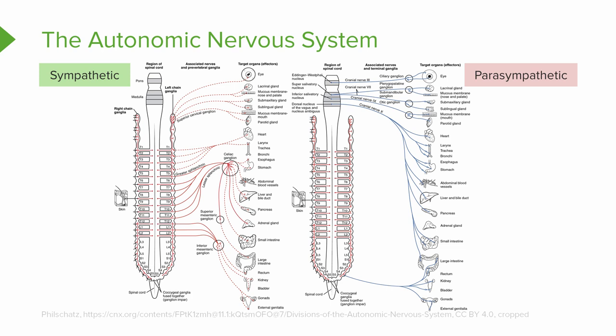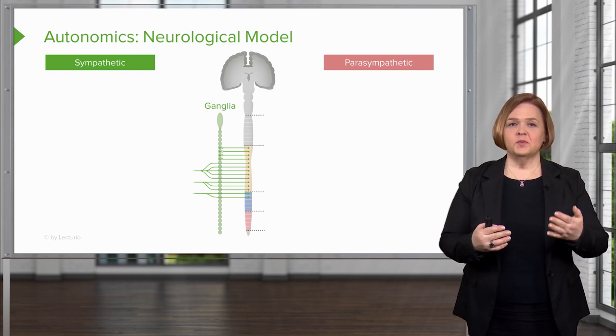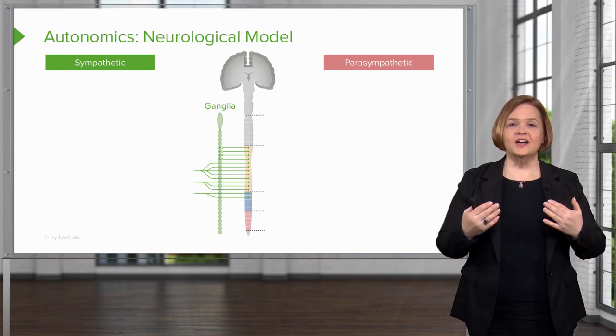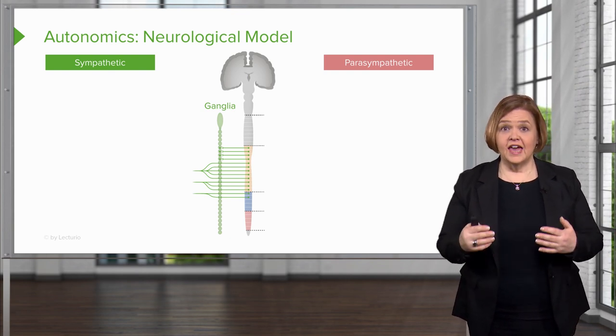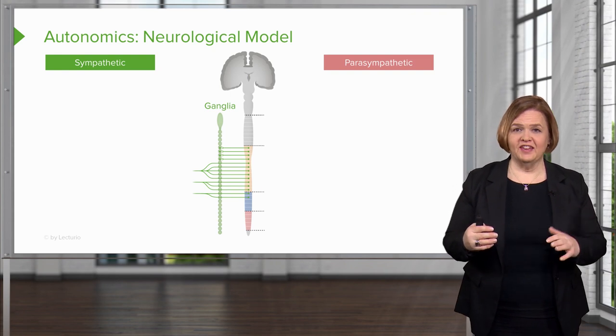We put that diagram up just to show you how complicated this can be. We're going to give you a very simple framework to look at for the autonomic nervous system — but looking at that diagram, you can see how complex the sympathetic and parasympathetic nervous systems are. Take a deep breath, because I'm going to walk you through what you need to know about the peripheral nervous system and compare sympathetic to parasympathetic in a much more straightforward graphic.